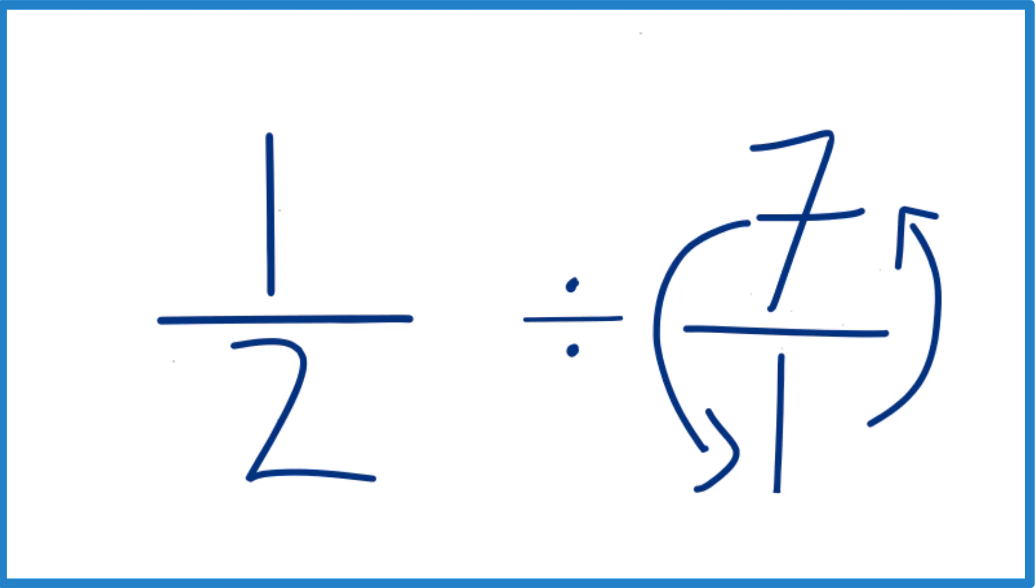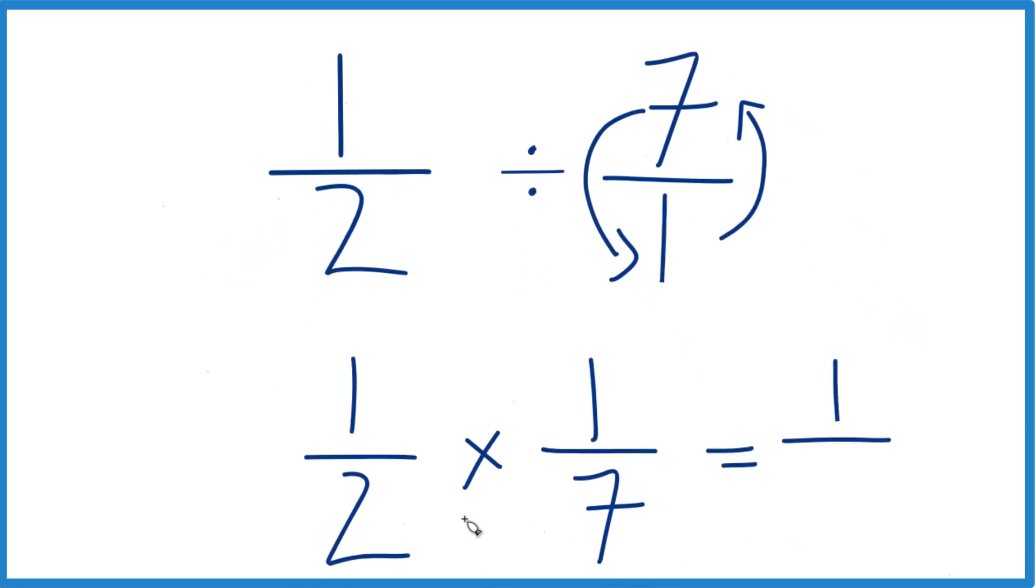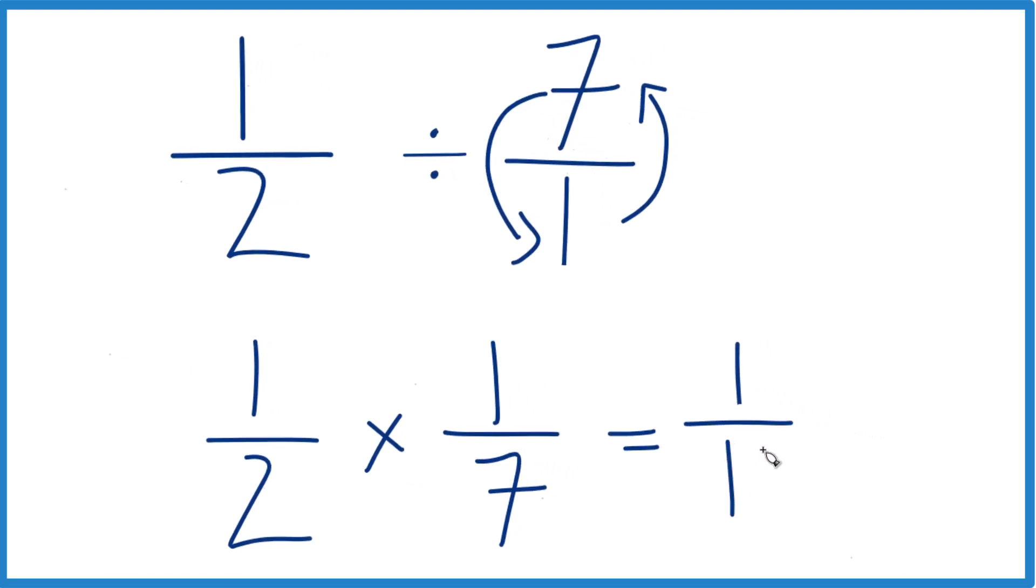And with fractions, when you multiply fractions, you multiply the numerators. 1 times 1 is 1. And then the denominators. 2 times 7. That's 14.